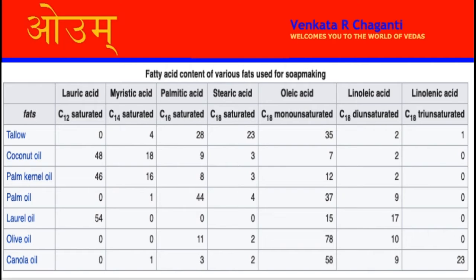Why soaps can clean your hands and remove the virus is because they are made of oils like coconut oil and palm oil. These oils contain lauric acid, myristic acid, palmitic acid, and so on. These are called fatty acids, and they are responsible for cleaning and removing viruses.